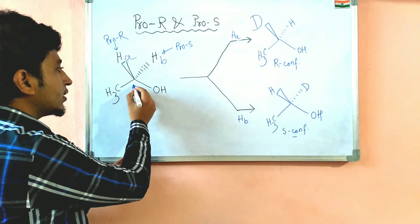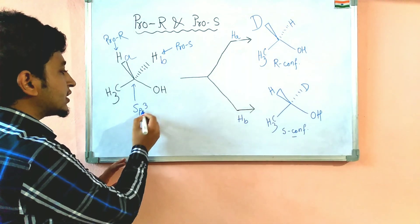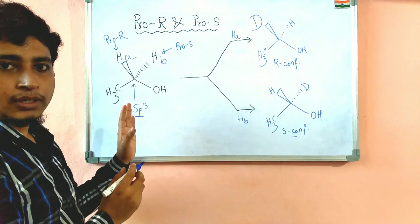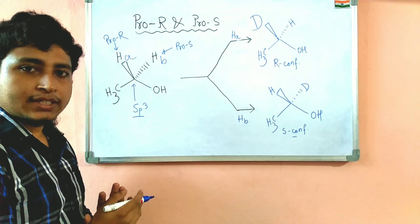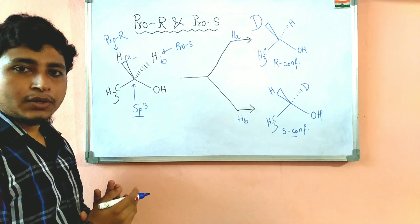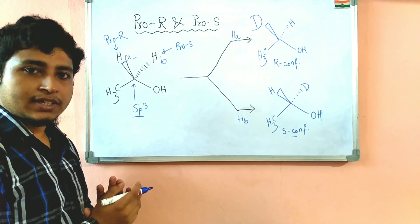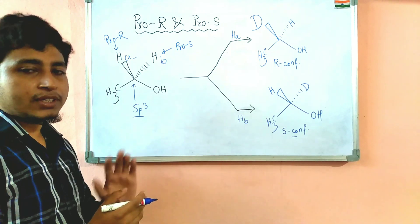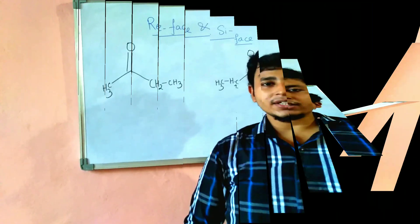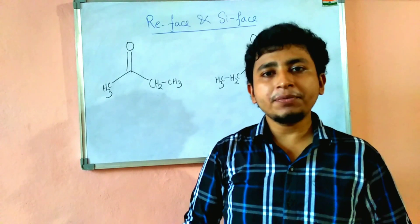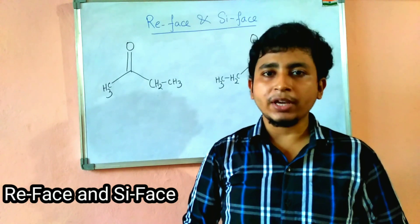For a carbon that is SP3 hybridized, we can use the Pro-R and Pro-S designation. But for a carbon that is SP2 hybridized, we have to check the Re-face and Si-face. So we will now start the discussion on Re-face and Si-face.